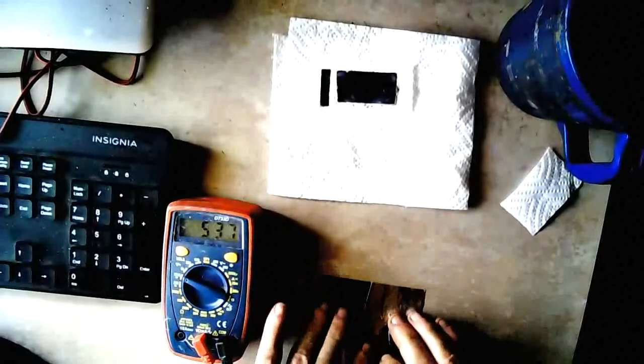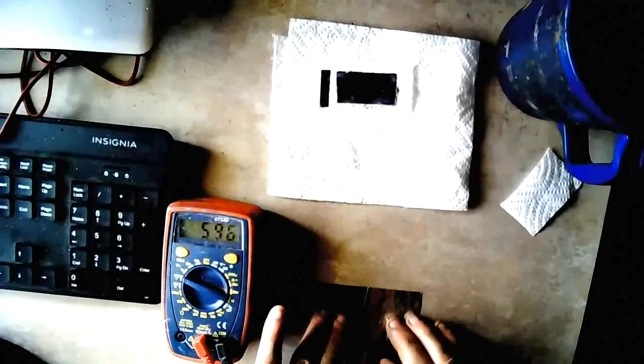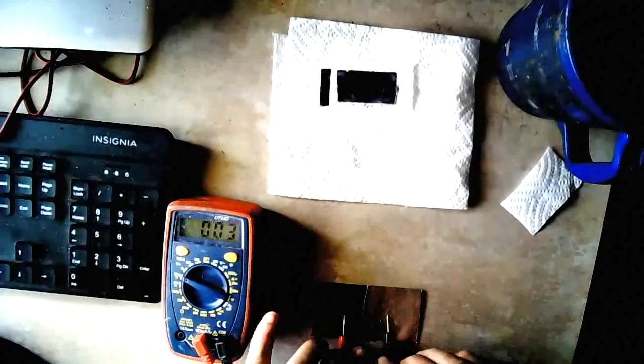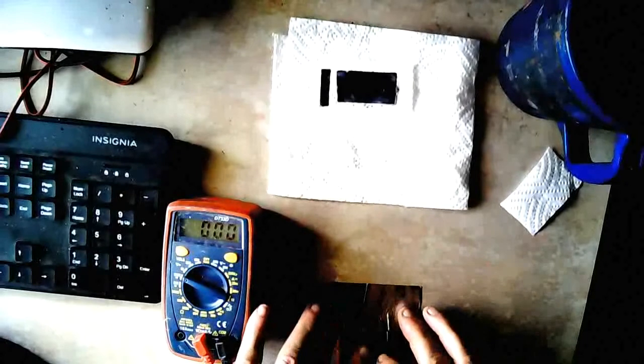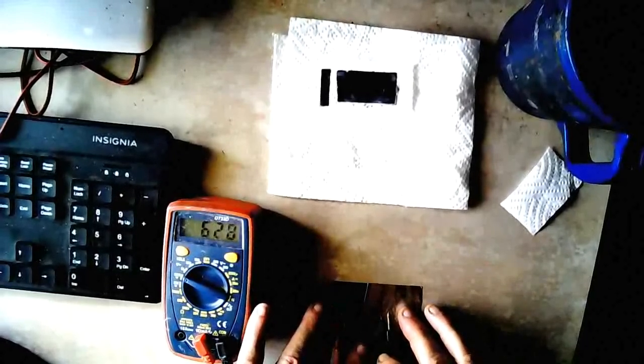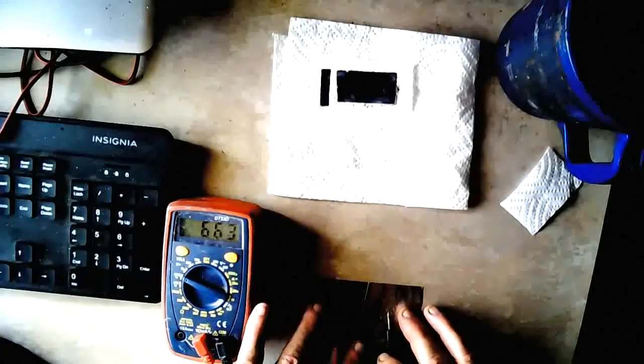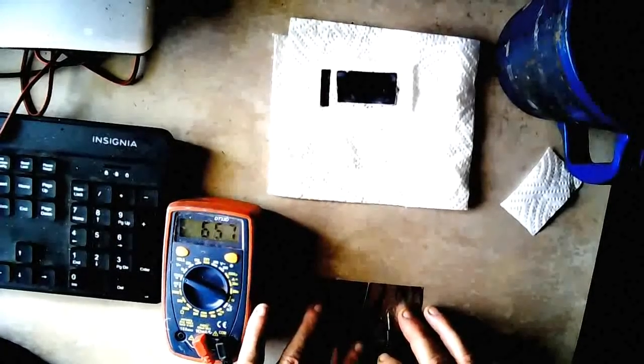When you rub it, you can push the voltage up by rubbing it. Then of course, if you take your fingers off of it, you get nothing. Our natural voltage of our bodies is about 70 millivolts, and look, that's way higher than that, ten times higher just about.